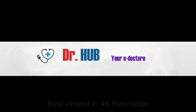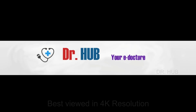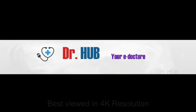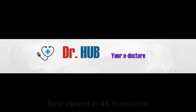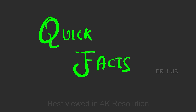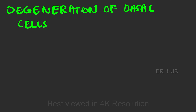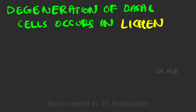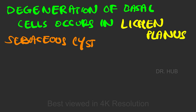Hello everyone, this is Dr. Herb, your e-doctor. In case you haven't subscribed, please do subscribe for updates. Today we are continuing the quick facts. Degeneration of the basal cells occurs in lichen planus. Sebaceous cyst is seen in Gardner syndrome.